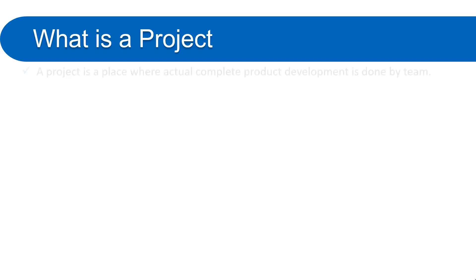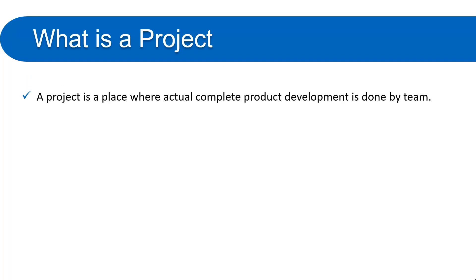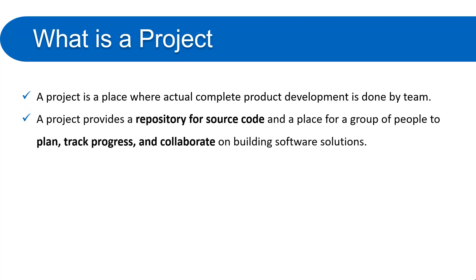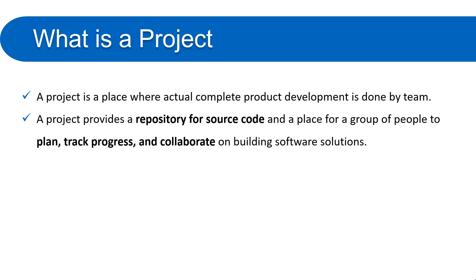A project is a place where the complete product development is done by the team. Everything required for the development of a particular software is available in the project. A project provides a repository for source code, so if you are working on software development you have a repository for source code management and a place for a group of people — the team.